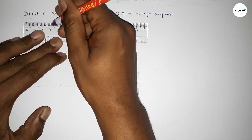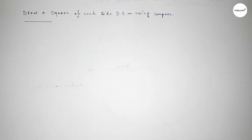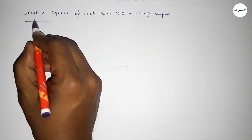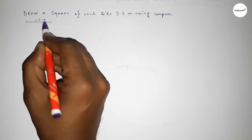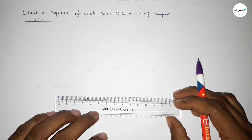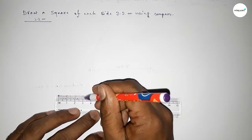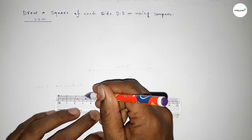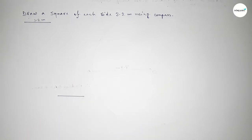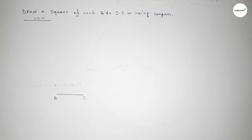Starting from zero, this is 3.2 centimeter. So this line is 3.2 centimeter. Now again drawing here a line of length 3.2 centimeter. This is 3.2 centimeter, and taking here point B and here point C.